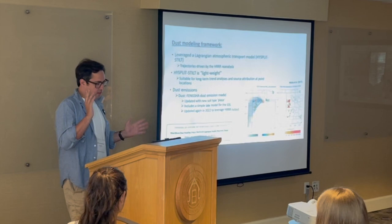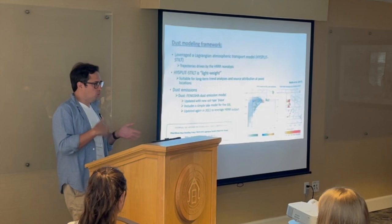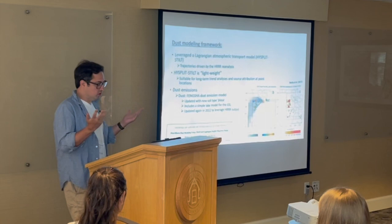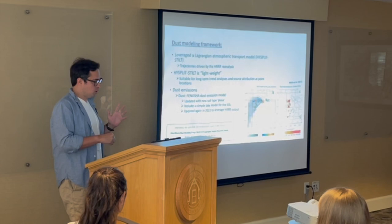In this case, we ran backward trajectories for Salt Lake City to figure out where the dust came from that was measured there during a given event. We use HYSPLIT because it's a lightweight trajectory model, so we can run it long-term for multiple years if needed. It's really useful for source attribution — identifying what areas are contributing to the dust being measured at some location.